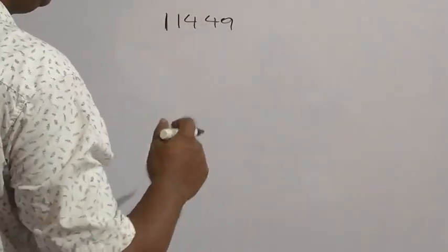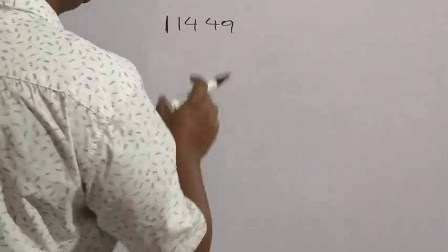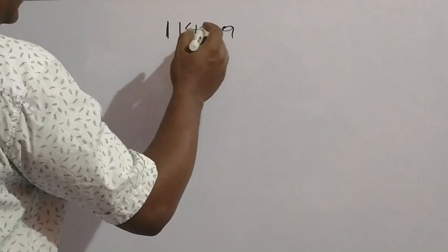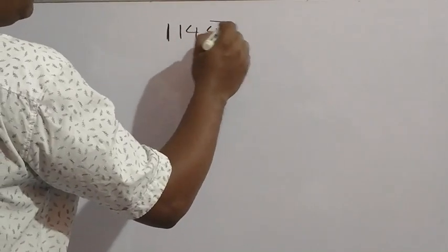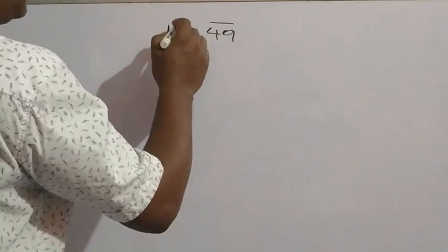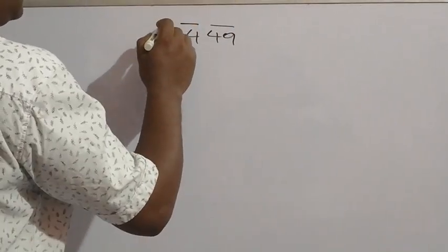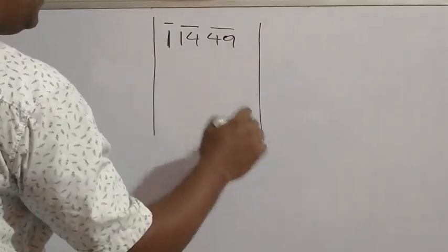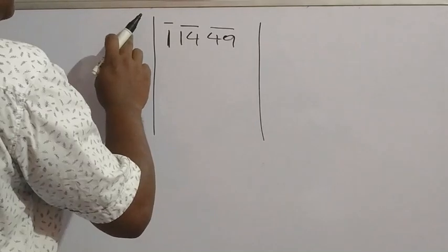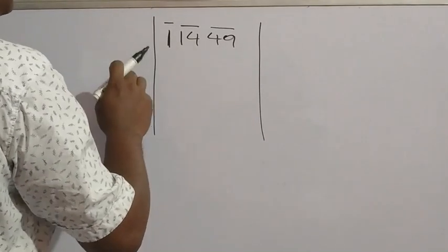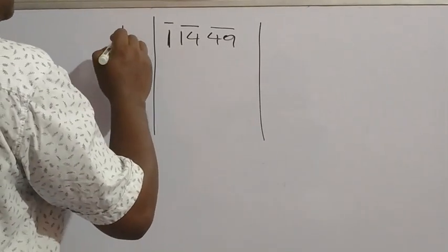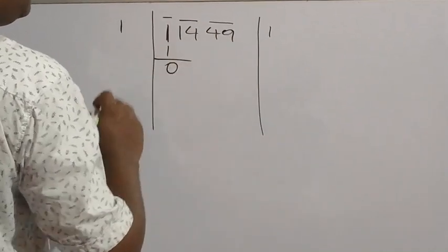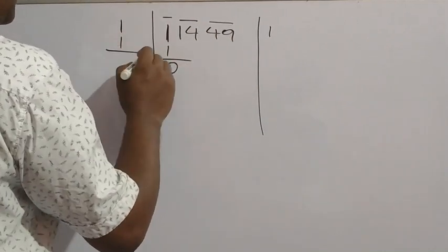I am doing bigger numbers — first 3-digit done, then 4-digit, now 5-digit. The same procedure you have to follow. From the right side make pairs: 49 is one pair, 14 is one pair, and 1 is left alone as one pair. First divide with 1. Take the number whose square is 1 or less than 1: that is 1. 1 × 1 = 1. Remainder is 0. Add 1 + 1 = 2 in the divisor.